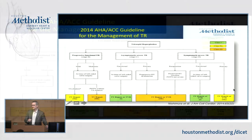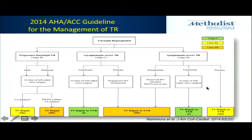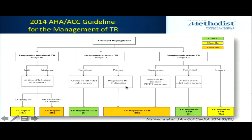Getting to management — this is where things get tricky. Looking at the 2014 guideline, which didn't change in the 2017 update: for symptomatic, severe, primary TR, intervention is reasonable — but that's only about 20% of patients with severe symptomatic TR. If it's functional and you're going to surgery, that's a good time to fix the tricuspid. If it's a re-operation with preserved RV, that's reasonable. Asymptomatic at the time of surgery is fine, or primary TR with RV dysfunction.